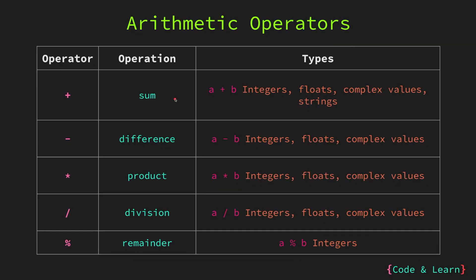Let us move to arithmetic operators, which as the name suggests are used to perform arithmetic operations on operands. All arithmetic operators are binary operators. As we see in mathematics, the plus sign or the sum operator is used to add two operands. Like in our example here, a + b, where a and b can be of any numeric type or strings. In adding different numeric types with each other, the result will be of the same type as the operand on the left of the operator. So if a is int and b is float, and we are adding the two, the result will be int.